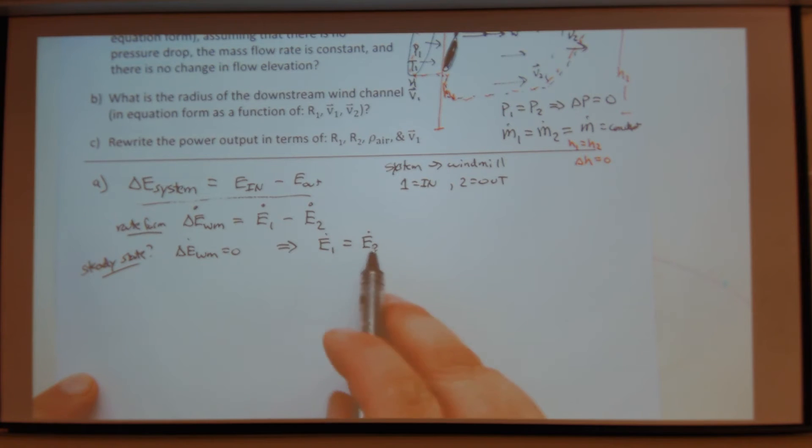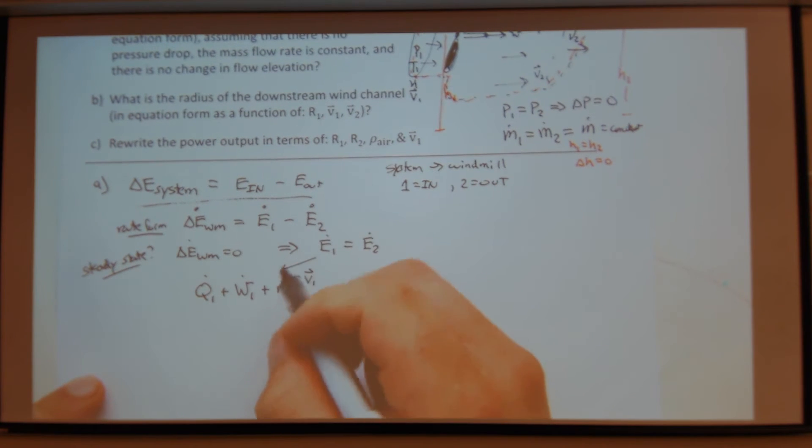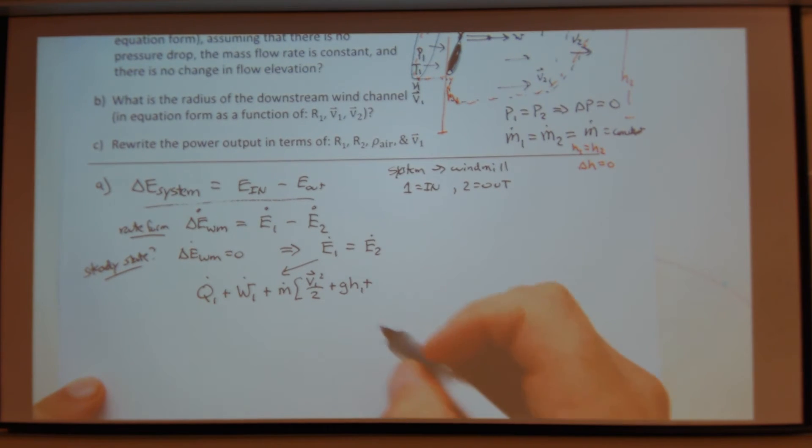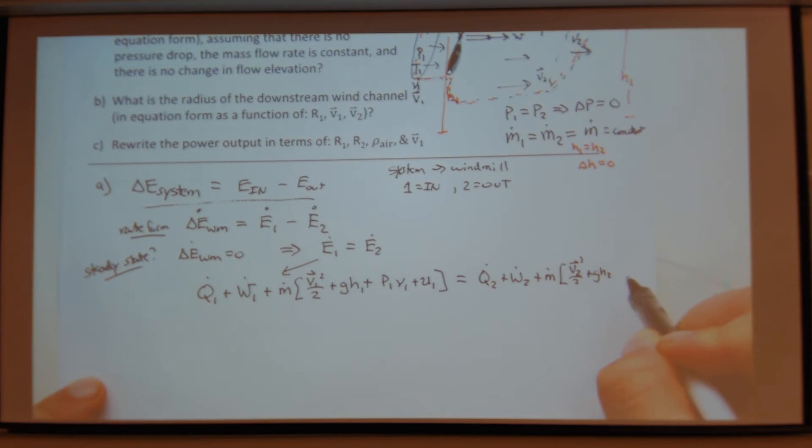So let's write this all out. So I can expand it. Okay. So this one is Q1 dot plus work 1 dot plus M dot V1 squared over 2 plus gH1 plus P1 V1 plus small u1. And then that equals Q2 dot plus W2 dot plus M dot V2 squared over 2 plus gH2 plus P2 V2 plus u2.